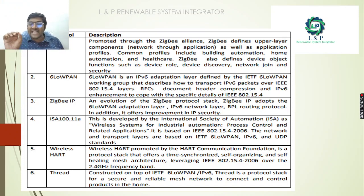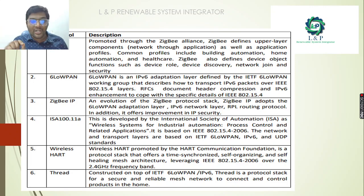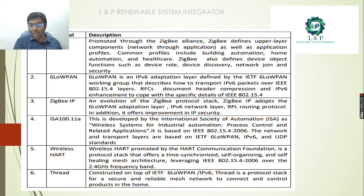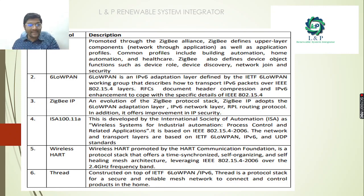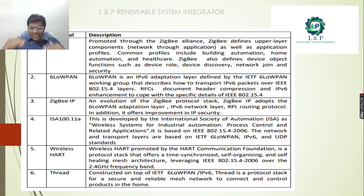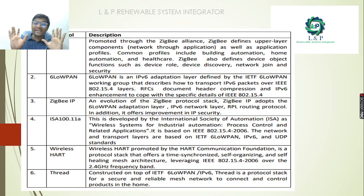Next is ISA100.11a, which stands for the International Society of Automation — all wireless systems for industrial automation follow this protocol. Next is WirelessHART, established in 2006, with a frequency band of 2.4 GHz. Next is Thread, which is constructed on top of 6LoWPAN and IPv6 and is the most secure and reliable mesh network to connect and control products in the home.